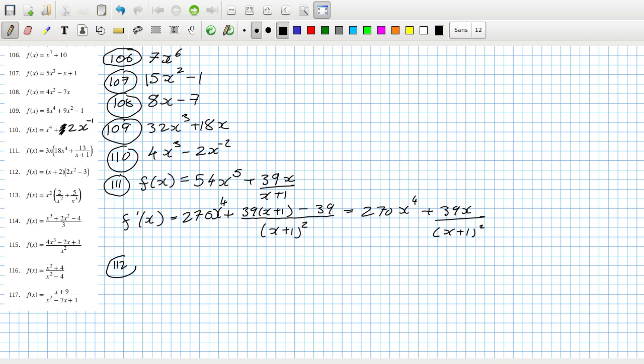112, we could use the product rule here. So the derivative would be 2x squared minus 3 plus x plus 2 times 4x. So that's 6x squared plus 8x minus 3.